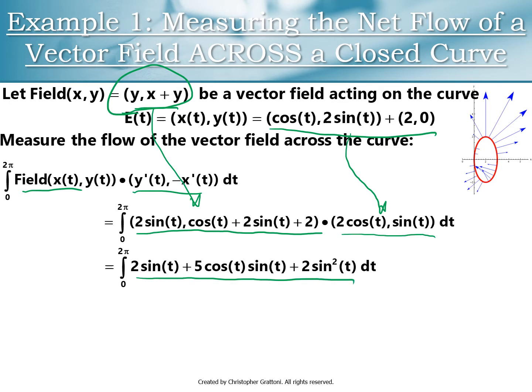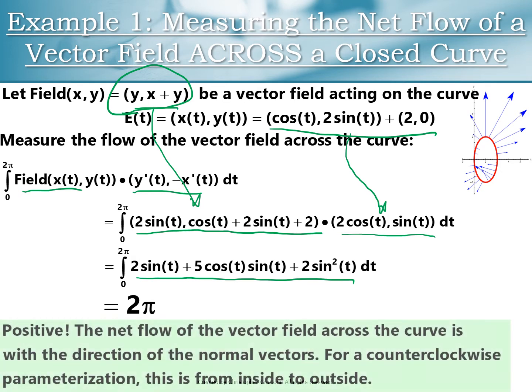That's going to be a very common theme — you have to be comfortable integrating expressions involving lots of powers of sines and cosines. This works out to 2 pi. We then summarize: the net flow of the vector field across our curve is in the direction of our normal vectors. Since we have a counterclockwise parameterization and used the right-footed normals, this is going to be from inside to outside.